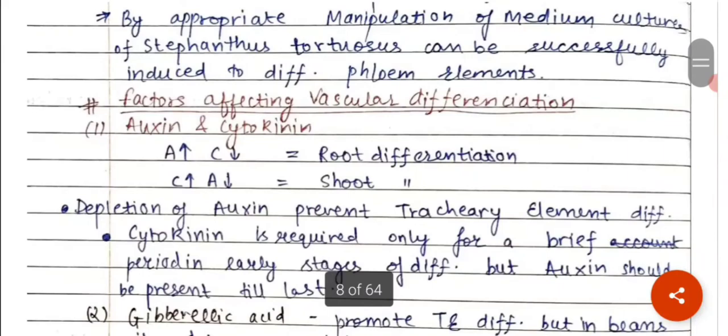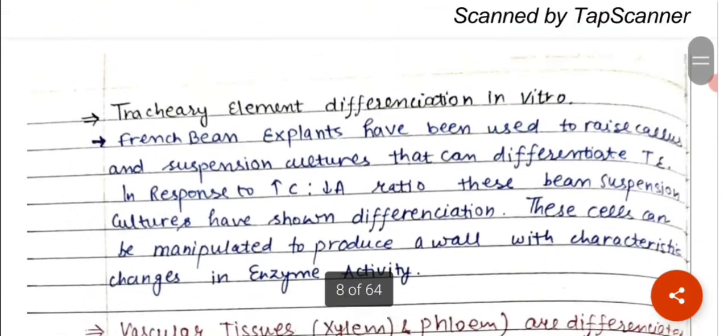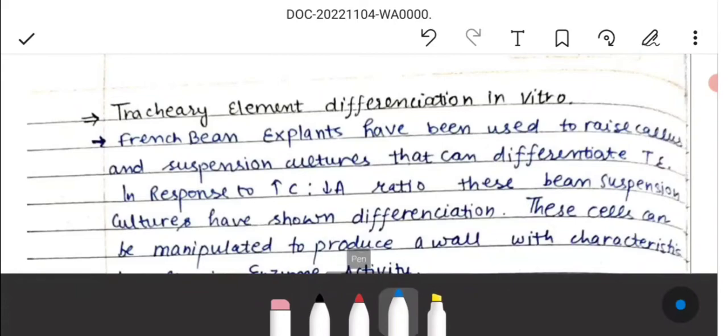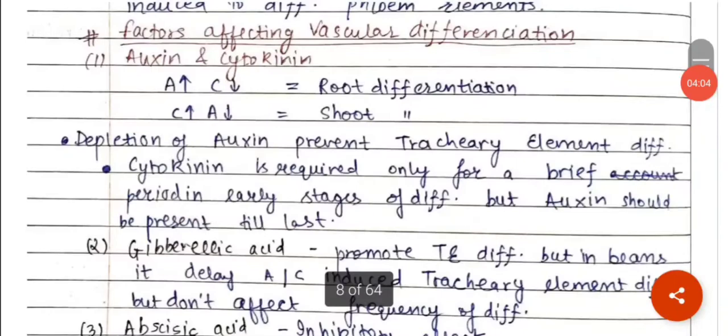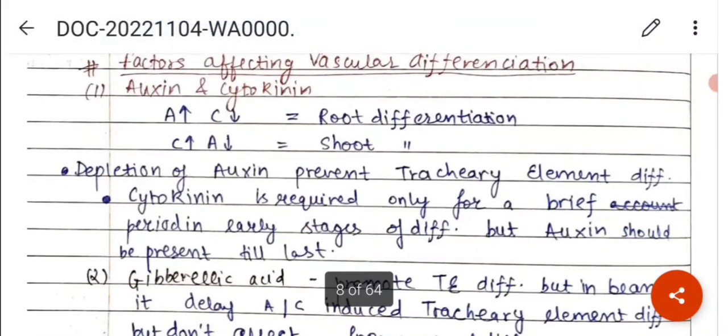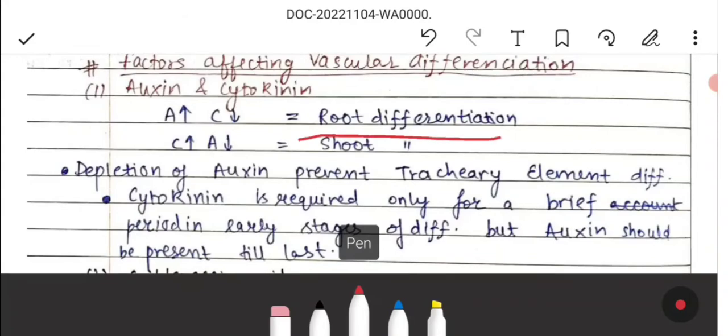What are the factors affecting the vascular differentiation? The first one is auxin and cytokinin. If auxin concentration is high in the medium, then root development will occur.